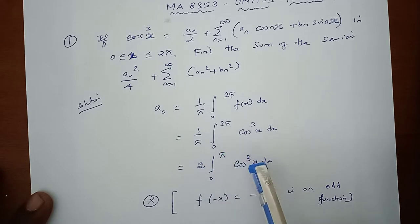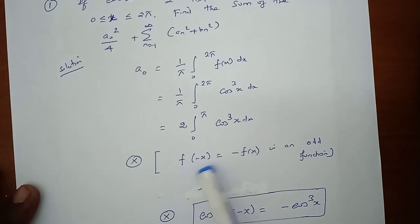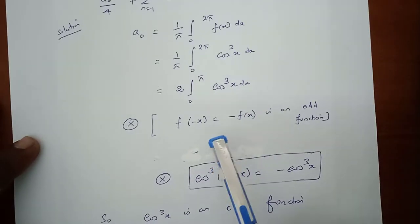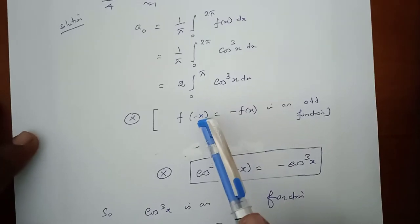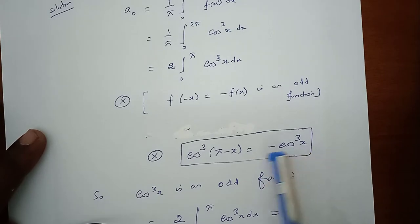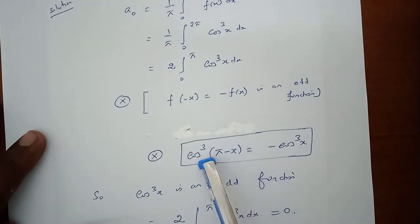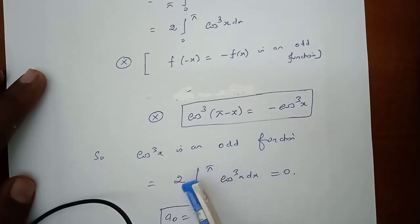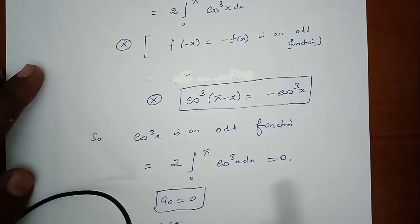This can be written as 2 times the integral from 0 to π of cos³x dx. Check whether the function is even or odd. An odd function satisfies f(−x) = −f(x). For this function, cos³(π − x) = −cos³x, so cos³x is an odd function. Therefore 2 times the integral from 0 to π of cos³x dx = 0, so a₀ = 0.